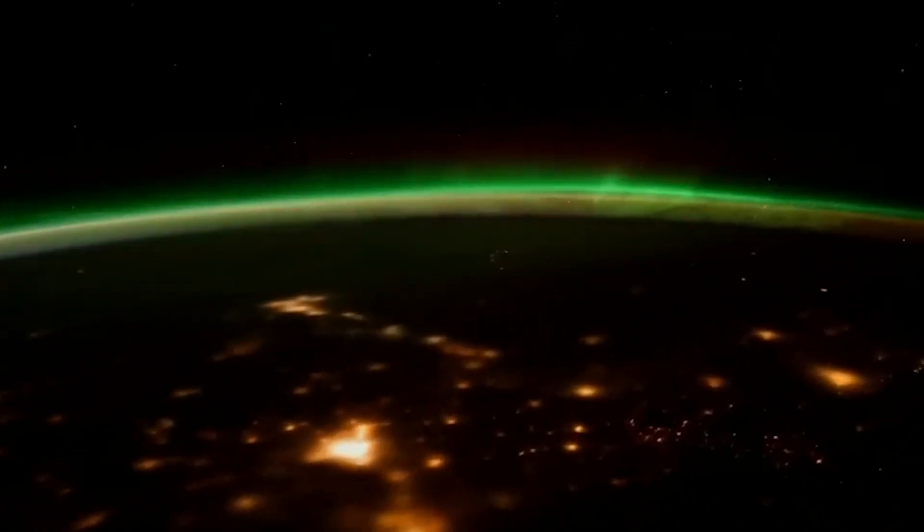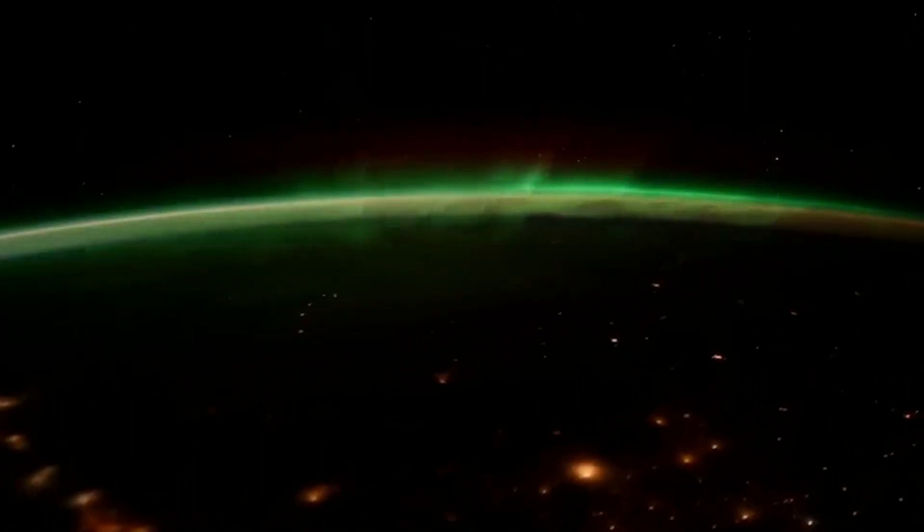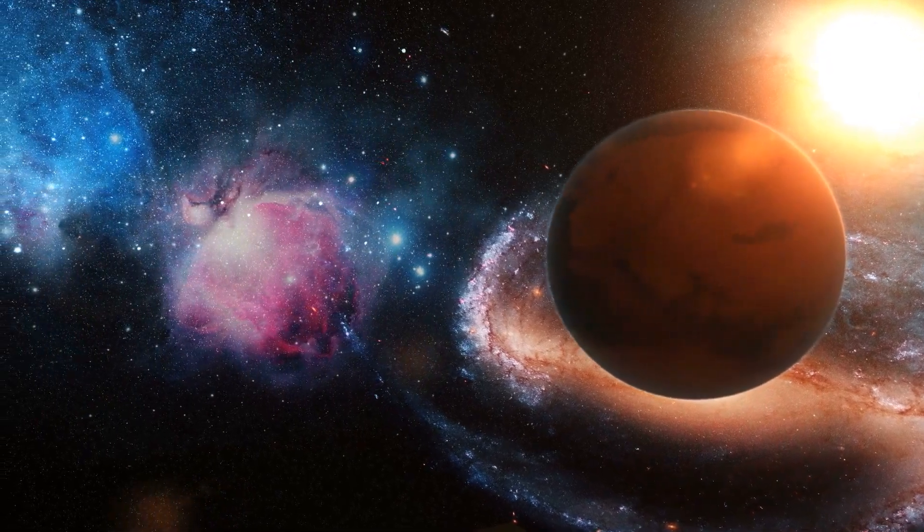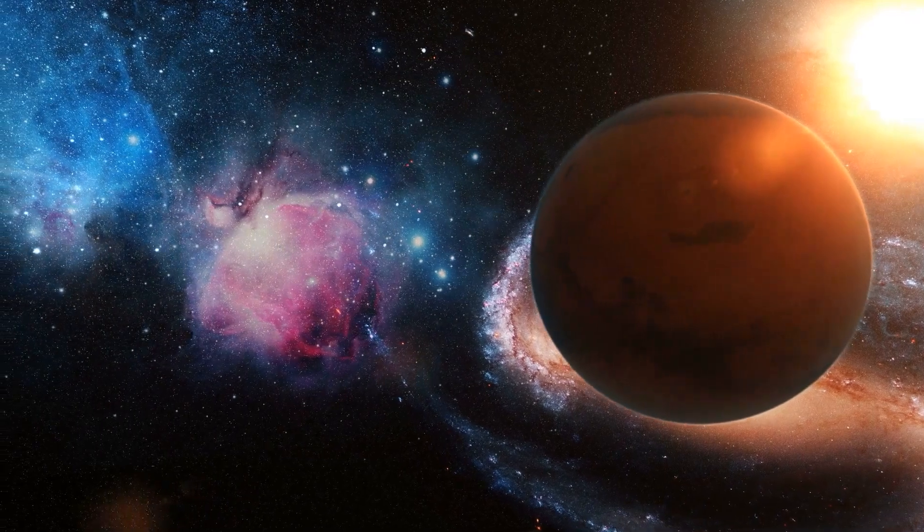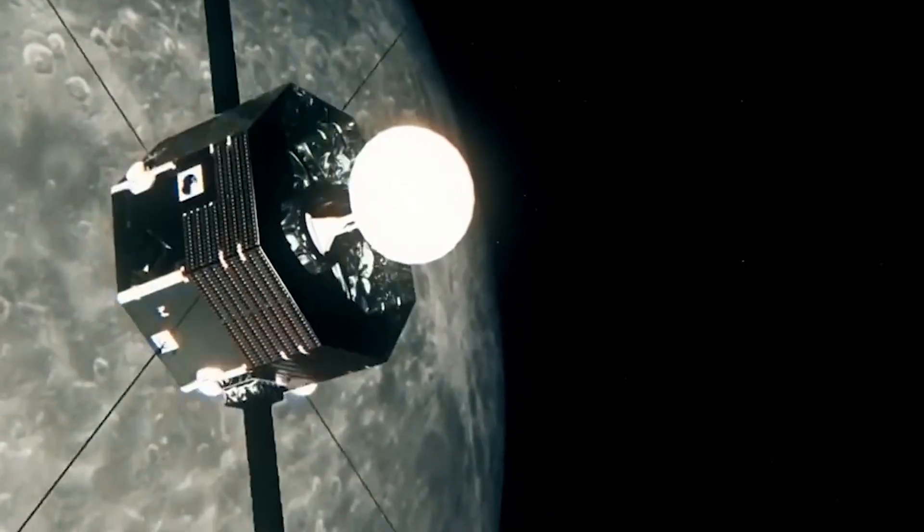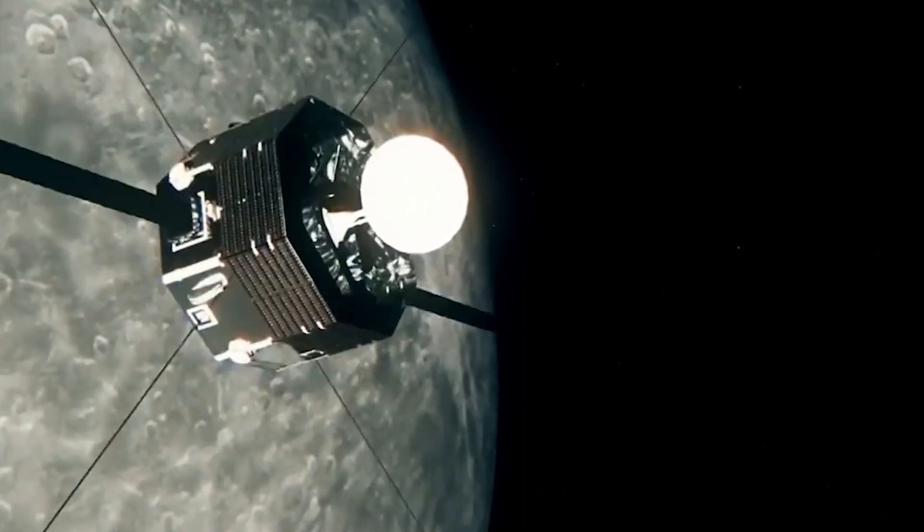Unlike Earth, where the magnetic field is generated by a liquid iron-nickel outer core, Mercury's core is thought to be partially molten and smaller in proportion to its overall size. This raises questions about how such a magnetic field could be generated and sustained.